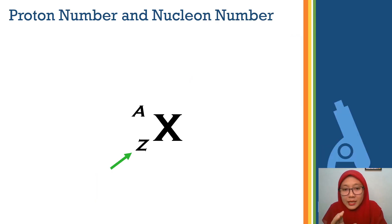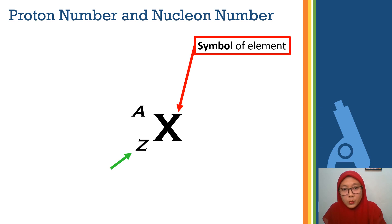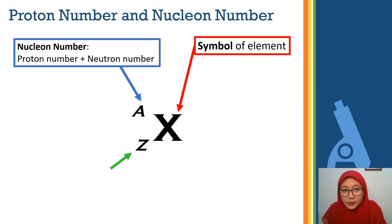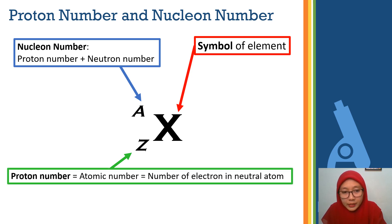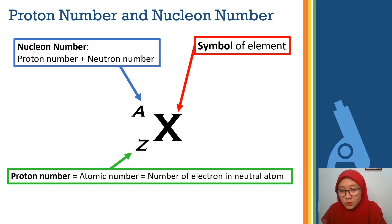Let's see how we can write an atom — how an atom is written. We have the symbol of elements. We have the nuclear number, where the nuclear number is the total of proton number and neutron number, placed at the top. At the bottom, we have the proton number. Remember, proton number is equal to the atomic number and also equal to the number of electrons in a neutral atom.